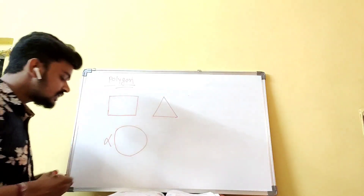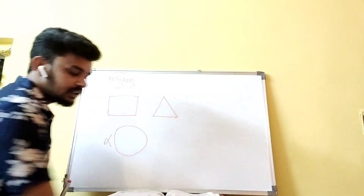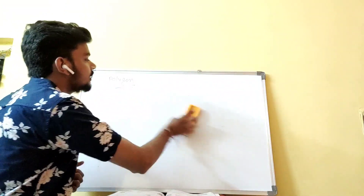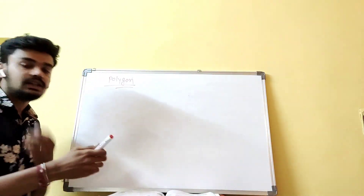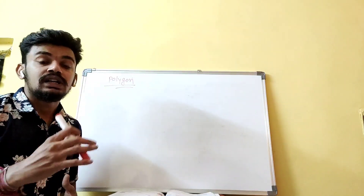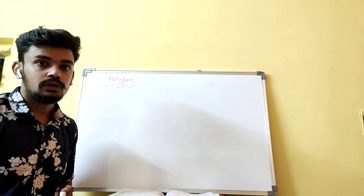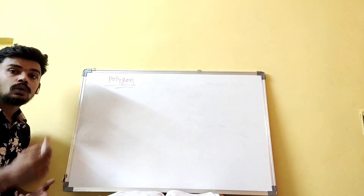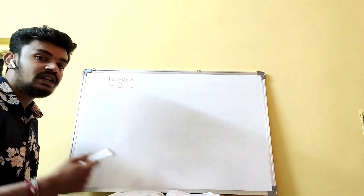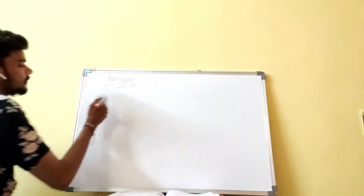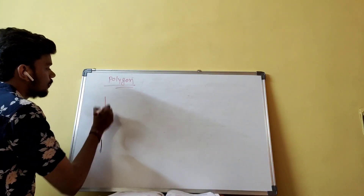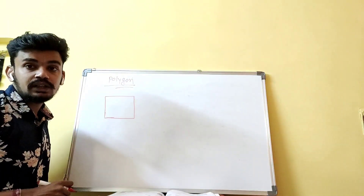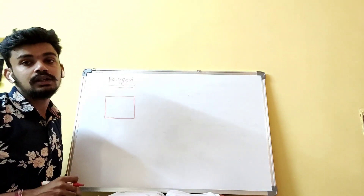Now you know which figures are included in the polygon and which are not. Let's move towards the next topic: regular polygon and irregular polygon. A closed figure made up of straight lines is called a polygon. Now, what is a regular polygon? If all sides of a polygon have the same measure, that type of polygon is called a regular polygon.